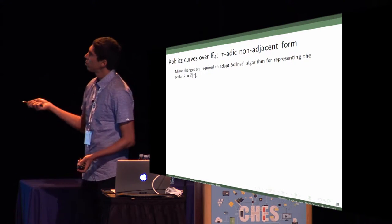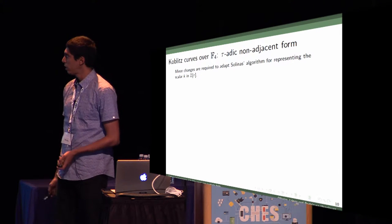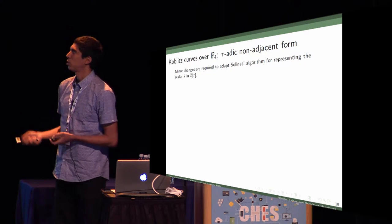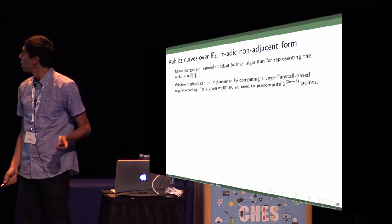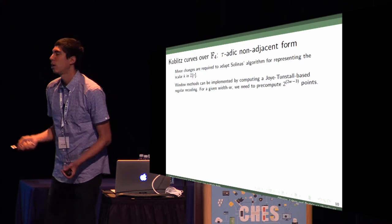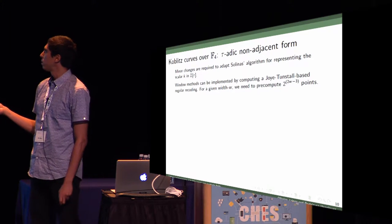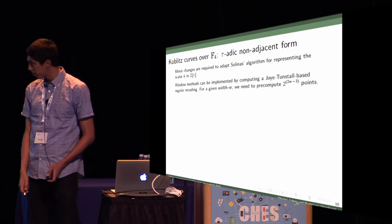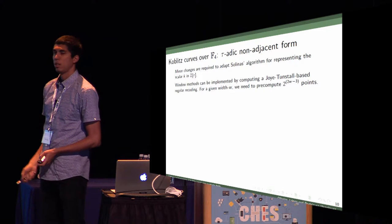To adapt the Solinas algorithm for representing scalars in zeta tau, it requires minor changes to adapt Solinas algorithm to the F4 case. Windowed methods can be implemented by computing a regular recoding based on the work of Joye and Tunstall. For a given width of W, we need to compute 2 to the power W minus 3 points. It's a big number of points, as we see in the next slide.